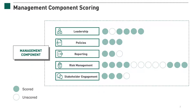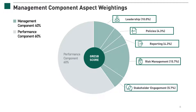The management component consists of five aspects: leadership, policies, reporting, risk management, and stakeholder engagement. It is composed of 28 indicators. The green circles are scored indicators. The weightings of each aspect are shown here. The management component contributes 40% of the score of the GRESB asset assessment.